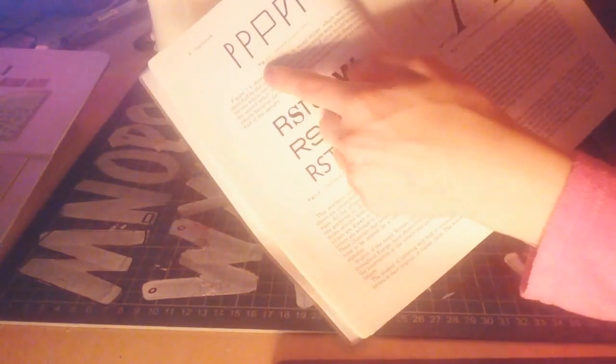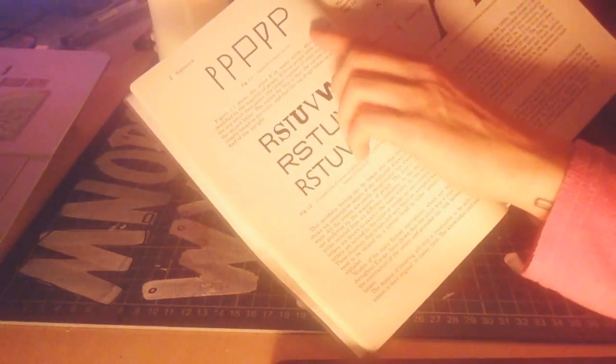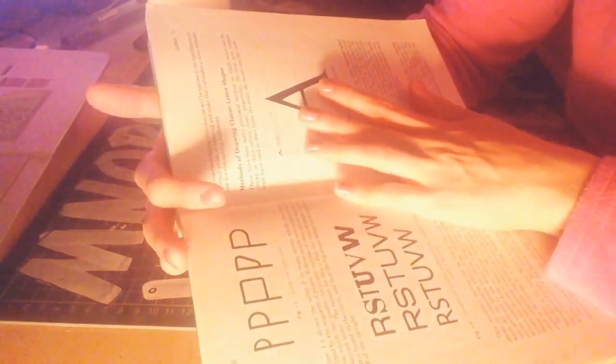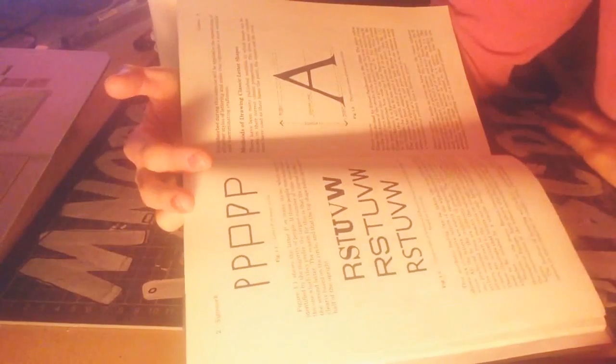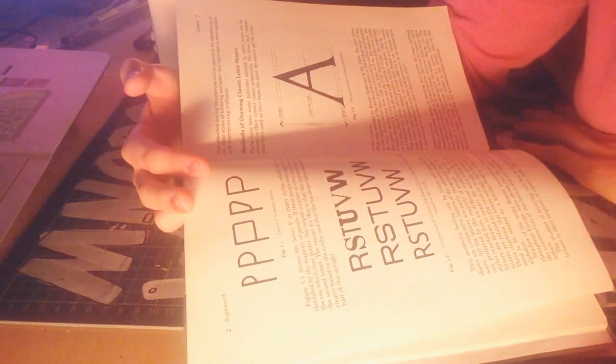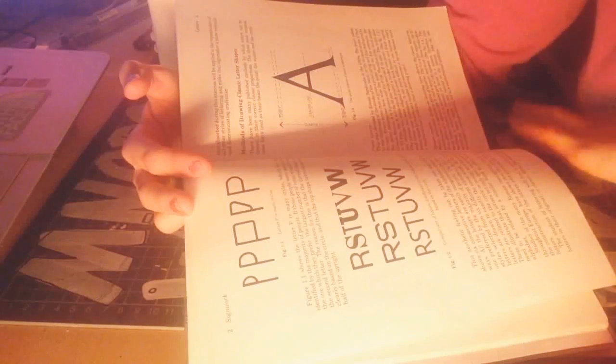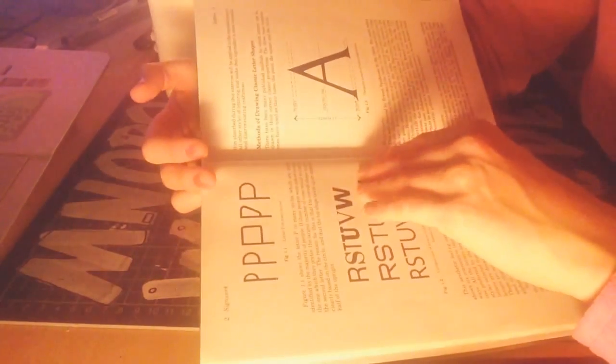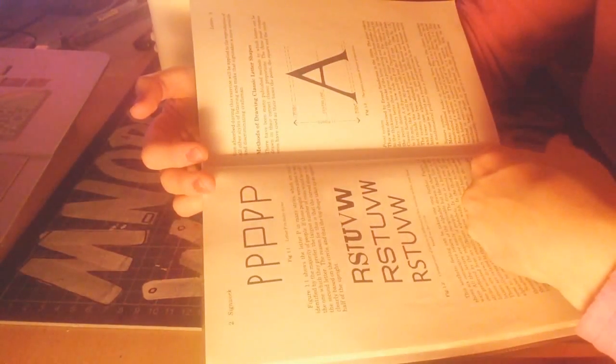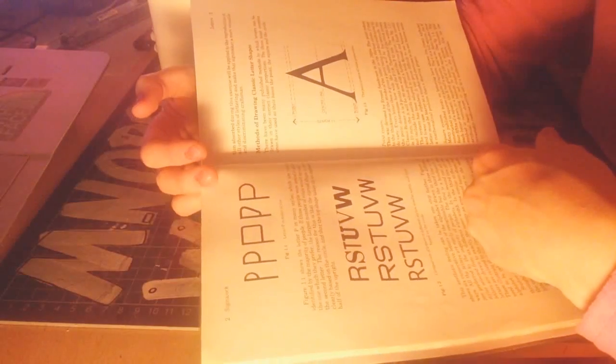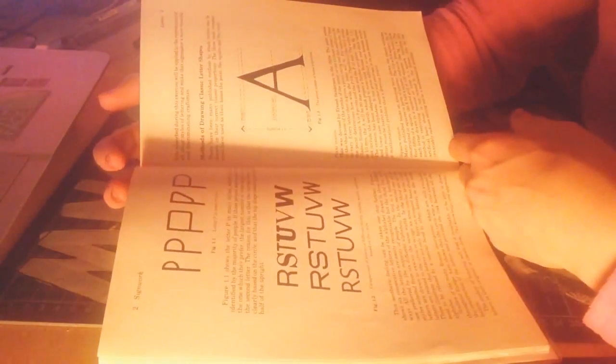Figure 1.1 shows the letter P in many styles, which are readily identified by the majority of people. If those people were asked to select the one which they prefer, the largest number of votes would be cast for the second letter. The reason for this is that the curved shape is most clearly based on a circle, and that the top shape takes up an apparent half of the upright.